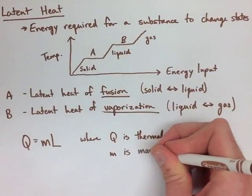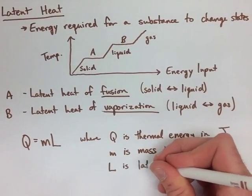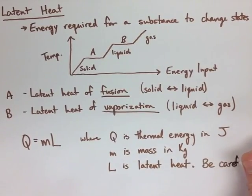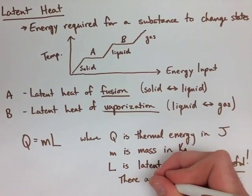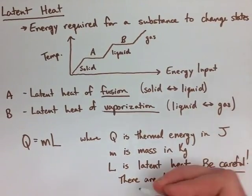Now we need to be careful because there's a different value for fusion and for vaporization of each substance. So you can't just use one value in both equations. We have to make sure we're either using the fusion latent heat value or the vaporization latent heat value.